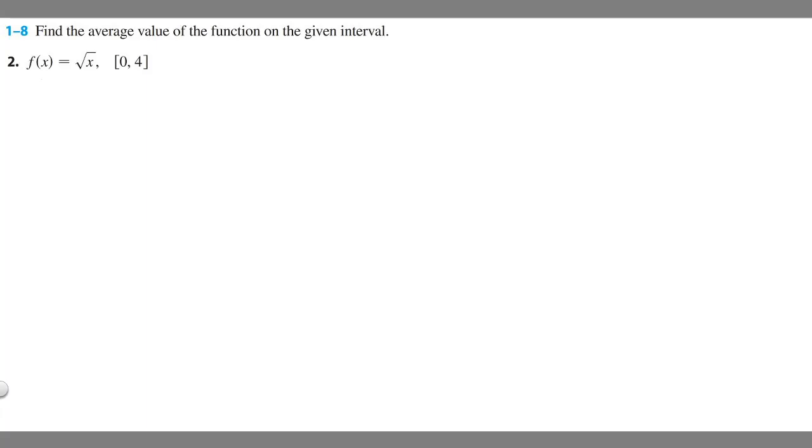In this problem, we're told to find the average value of the function on the given interval. So we're told that f of x equals the square root of x, and this is going to be from 0 to 4.